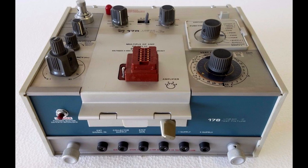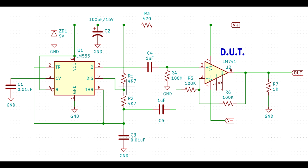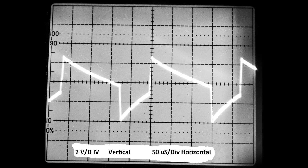The museum has a 178 test fixture for ICs for its 577 curve tracer, but this fixture is complicated to use and is intended to measure the more esoteric characteristics of devices, such as offset and common mode rejection. I built this simple go-no-go tester. It uses a standard 555 oscillator circuit to generate a sawtooth and a rectangular wave, which are applied to the two inputs of the op amp. The output should be as shown here.